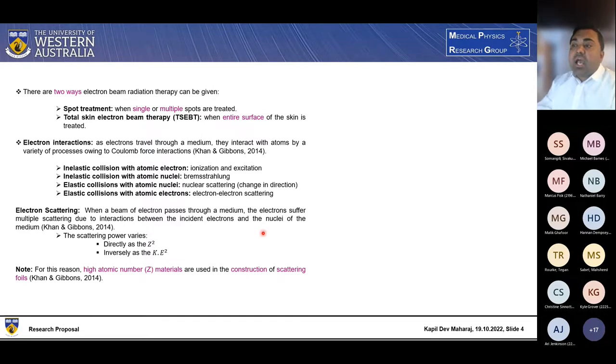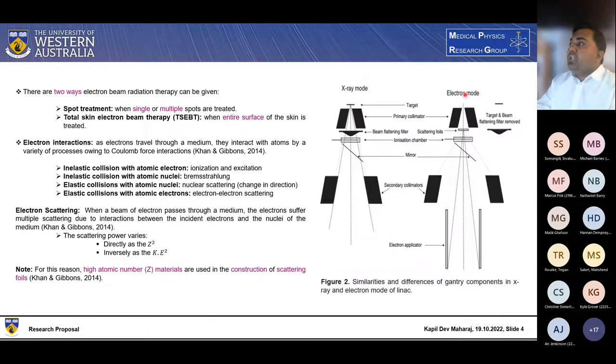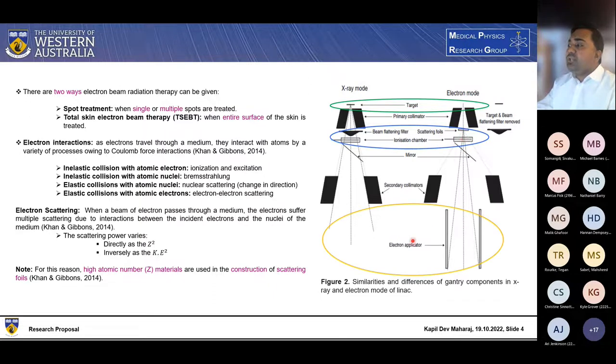Because of these two points, we usually use a high atomic number material for constructing the scattering foils. So in terms of the differences between the linear accelerator mode for photon and electron beam, in electron beam, we retract the target. And second main difference is that instead of using the beam flattening filter, we use an electron beam scattering foil to further scatter the electron beam. And in the end, we use the applicator to further shape the field size of the electron beam. So these are the three key differences which we observe in terms of the mode of X-ray mode and electron mode in linacs.